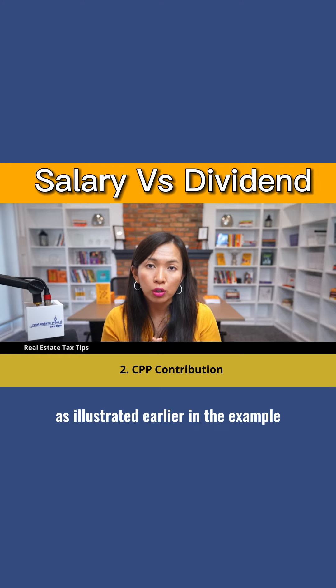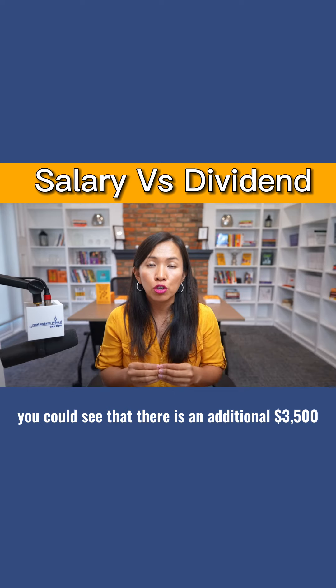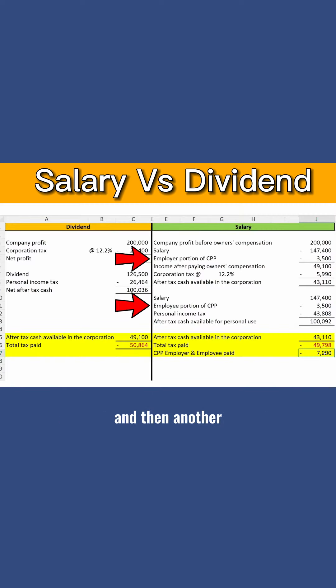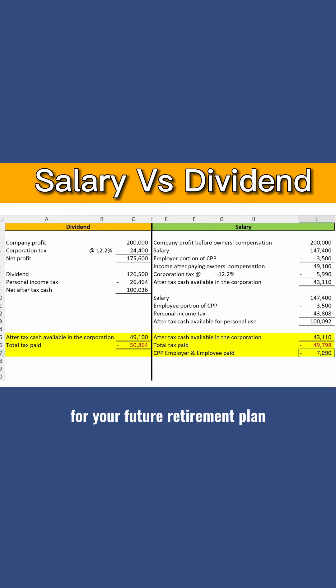The second difference between dividend versus salary is the CPP contribution. As illustrated earlier in the example, there is an additional $3,500 being contributed by the employer and another $3,500 being contributed by the taxpayer, for a total of $7,000 that the government forces you to put aside for your future retirement plan.